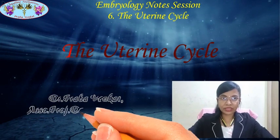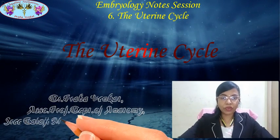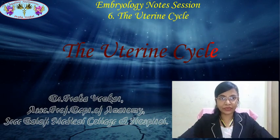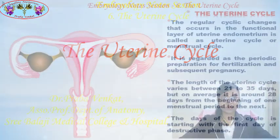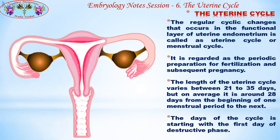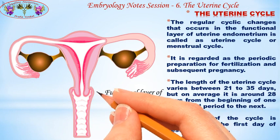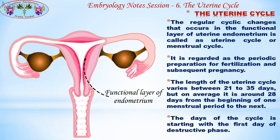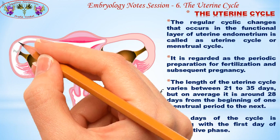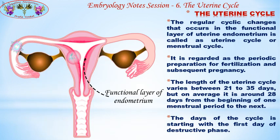Good day, this is a node session where we are providing notes for the uterine cycle in the animated background. The regular cyclic changes that occur in the functional layer of uterine endometrium is called the uterine cycle or menstrual cycle. It is regarded as the periodic preparation for fertilization and subsequent pregnancy. The length of the uterine cycle varies between 21 to 35 days, but on average it is around 28 days, from the beginning of one menstrual period to the next. The days of the cycle start with the first day of the destructive phase.